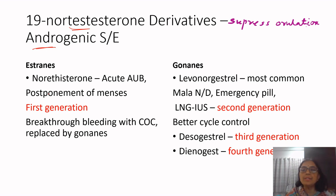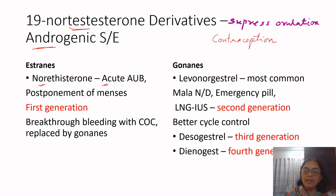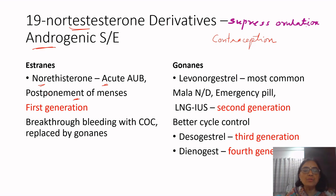Estranes and gonanes effectively suppress ovulation and are therefore the ideal drugs for contraception, used in most oral contraceptive pills. Estranes — previously used — are now mainly used only for acute AUB. Norethisterone comes as a 5 mg tablet (Primolut); for heavy menstrual bleeding, you may give one to two tablets three times a day until bleeding stops. It is also used for postponement of menses, starting at least three days before the expected period.